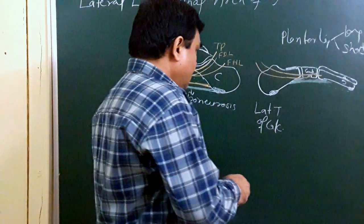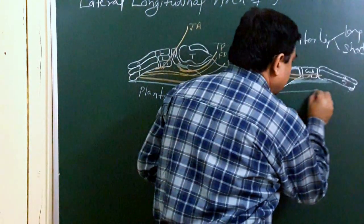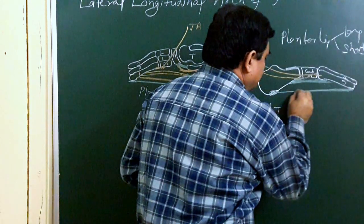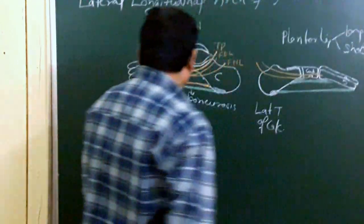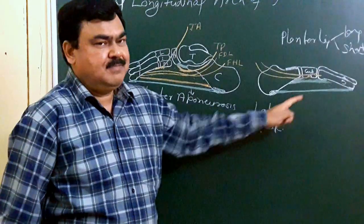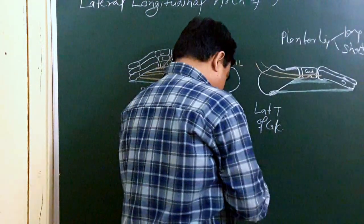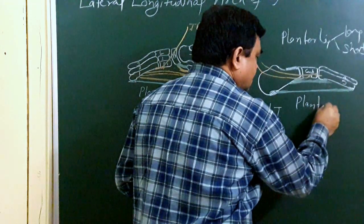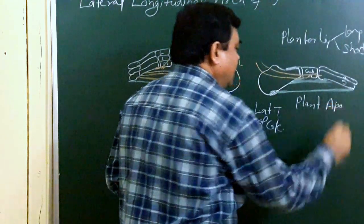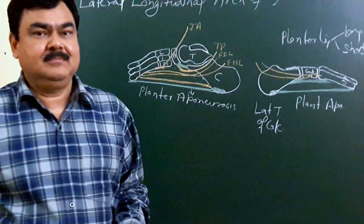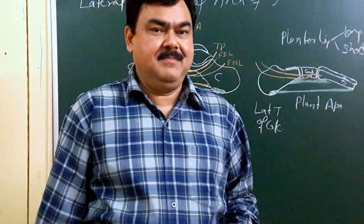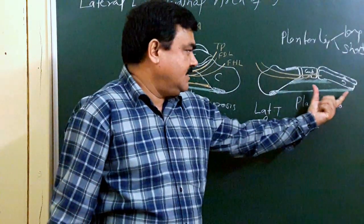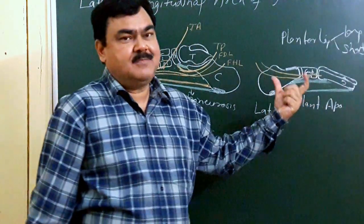The plantar aponeurosis forms a tied beam. It holds the two ends of this arch — the anterior and posterior ends — together, preventing the arch from flattening.